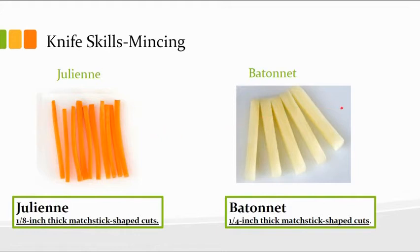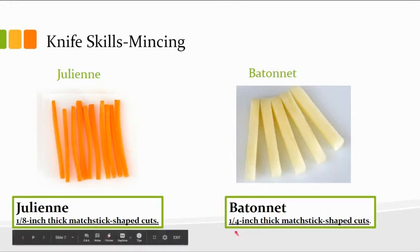The batonnet is cut just like the julienne, except they're twice the size — twice the thickness. So this is actually a quarter of an inch.